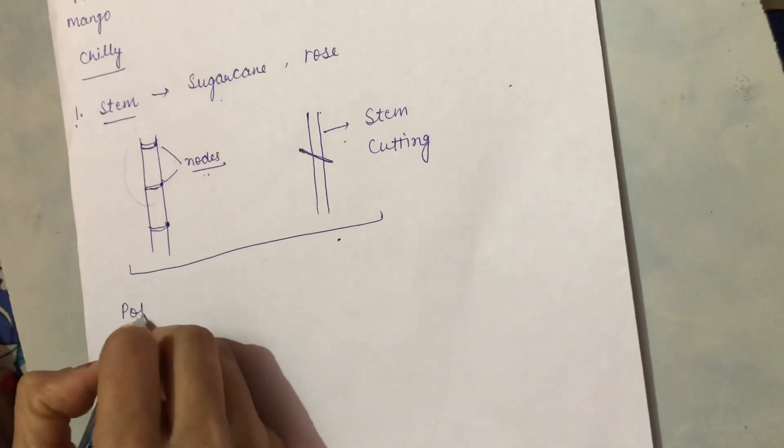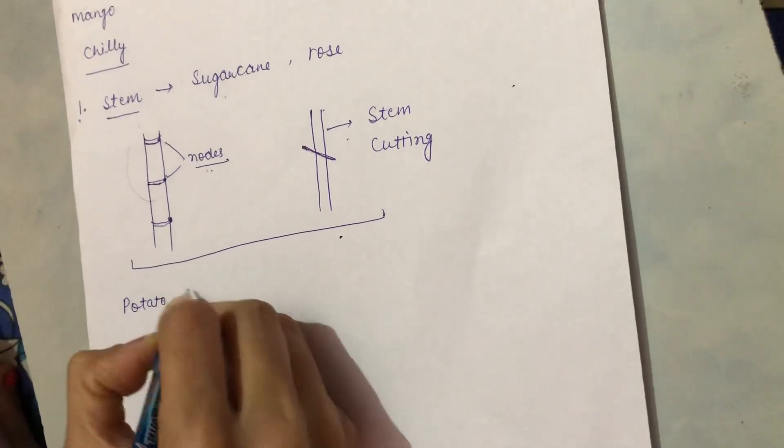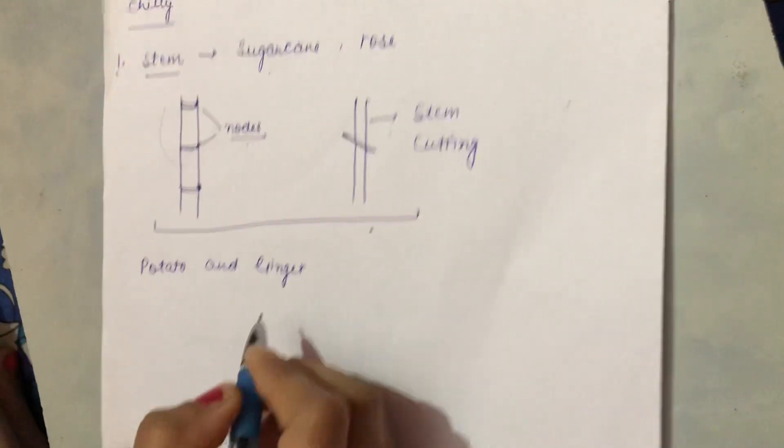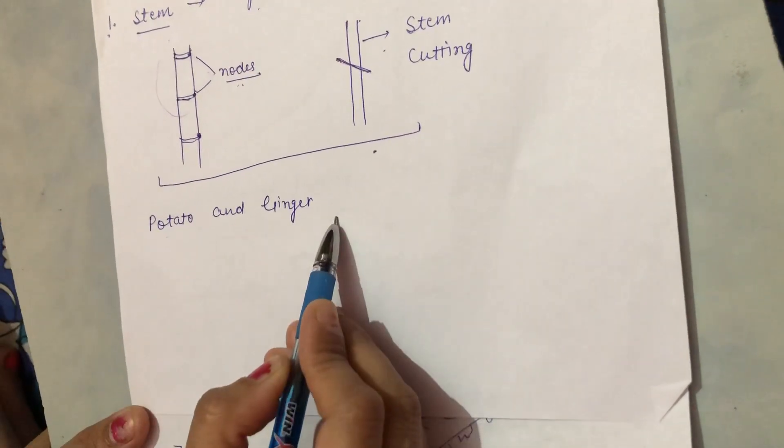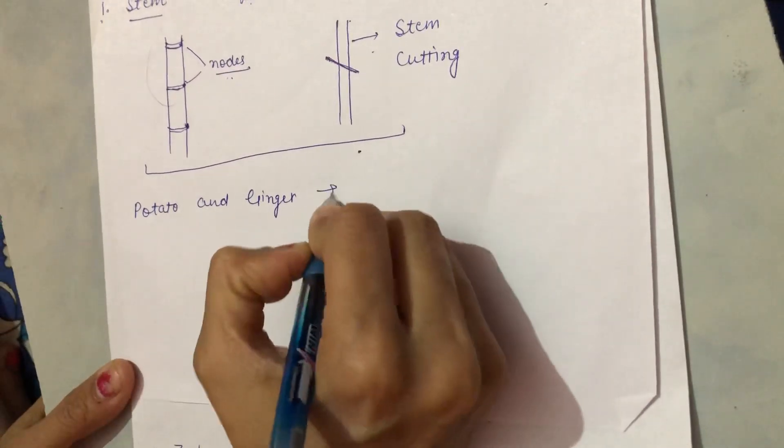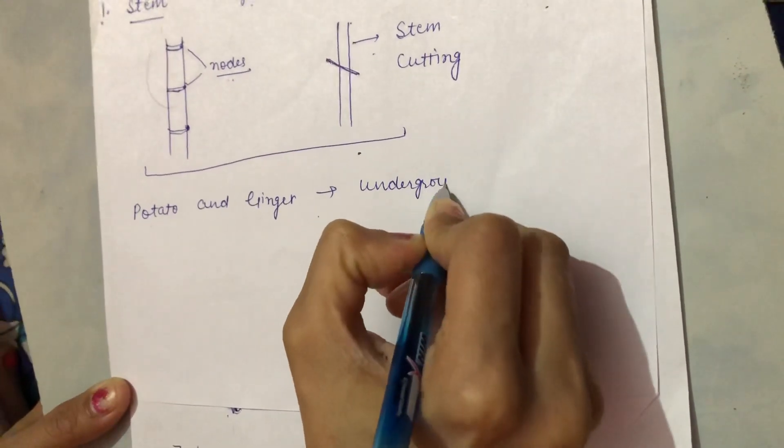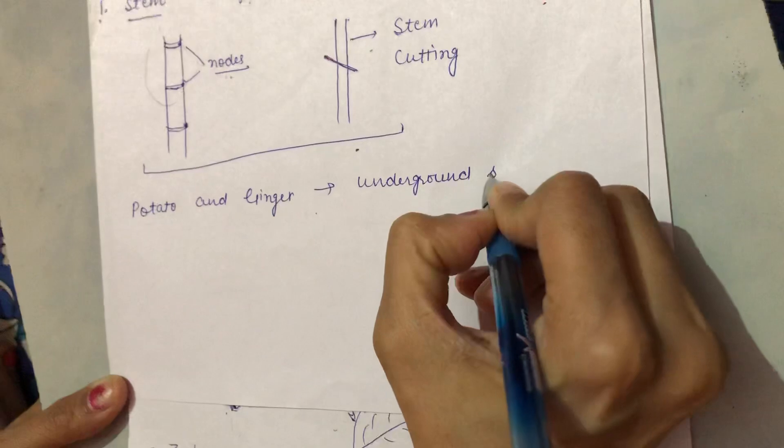But if we talk about potato and ginger, do you know these are also stems? These are the underground stems.